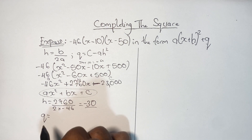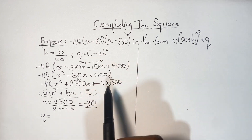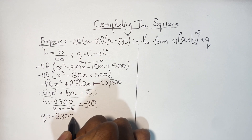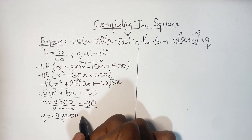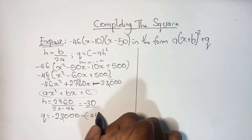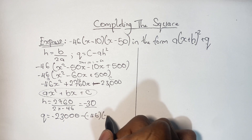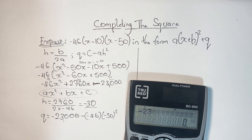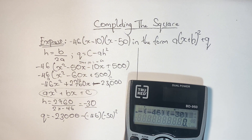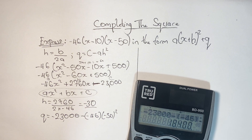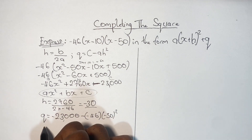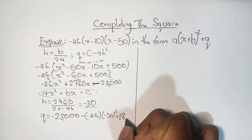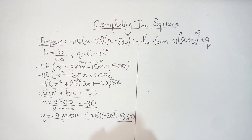Now working out Q — we know the C value is negative 23,000. Q equals C minus the product of A times H squared. A is negative 46 and H is negative 30, so we have negative 23,000 minus negative 46 times negative 30 squared. That gives us 18,400. So the value of Q equals 18,400.